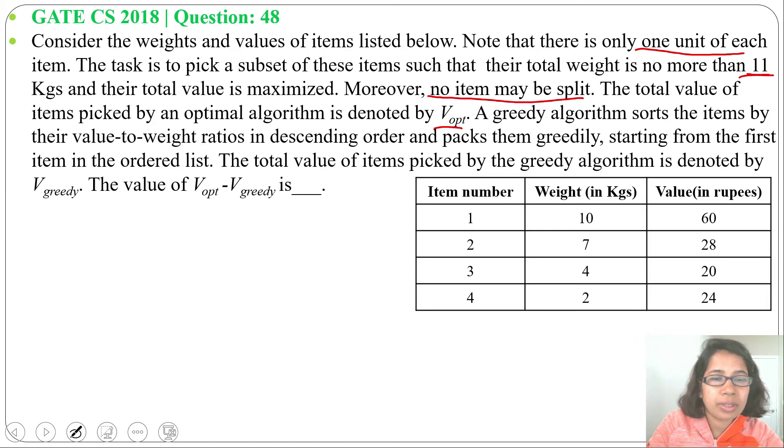Starting from the first item in the ordered list, the total value of items picked by a greedy algorithm is denoted by V_greedy. The value of V_optimal minus V_greedy is what we need to find.